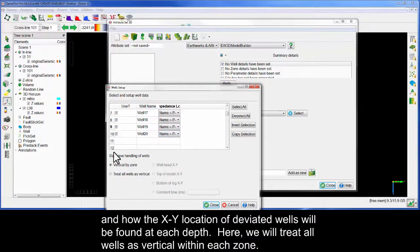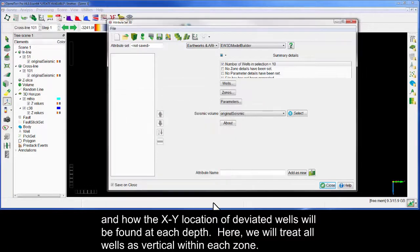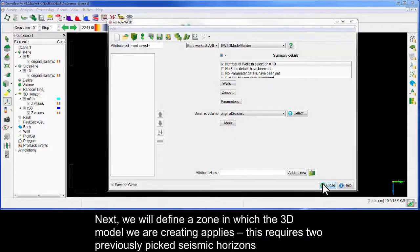Here, we will treat all wells as vertical within each zone. Next, we'll define a zone in which the 3D model we are creating applies.